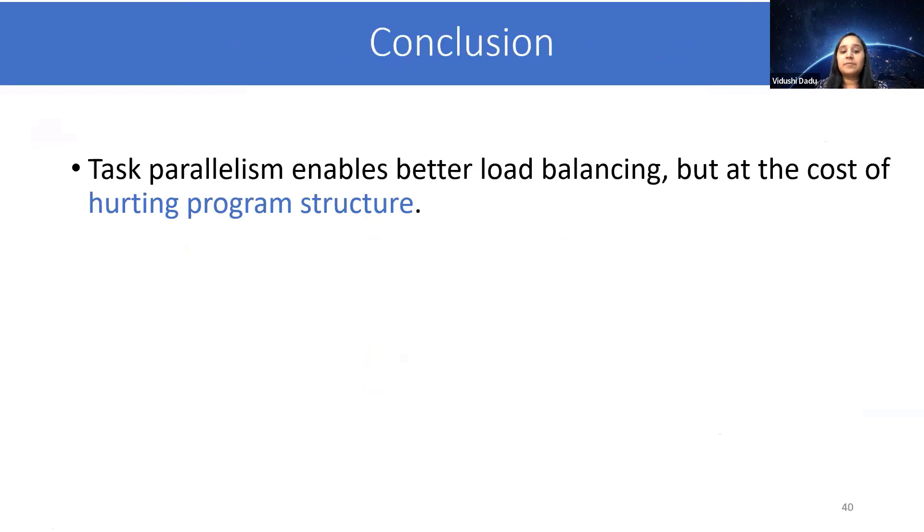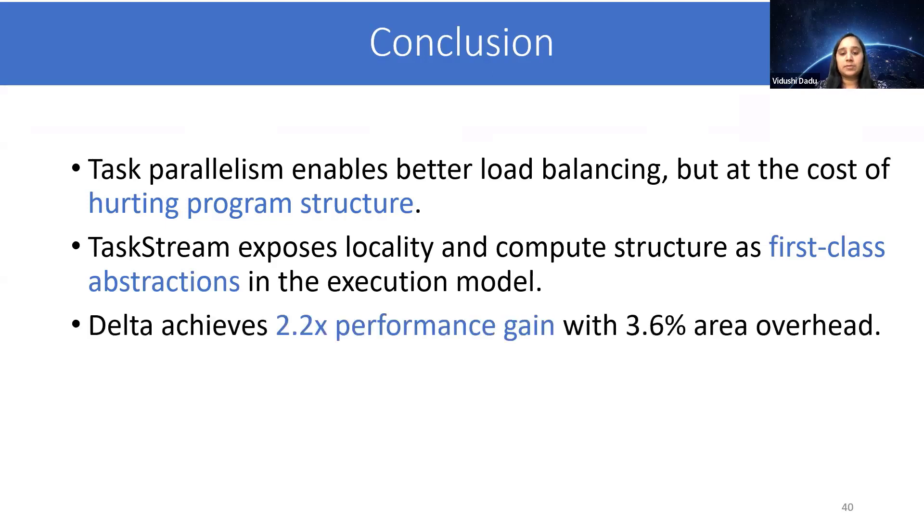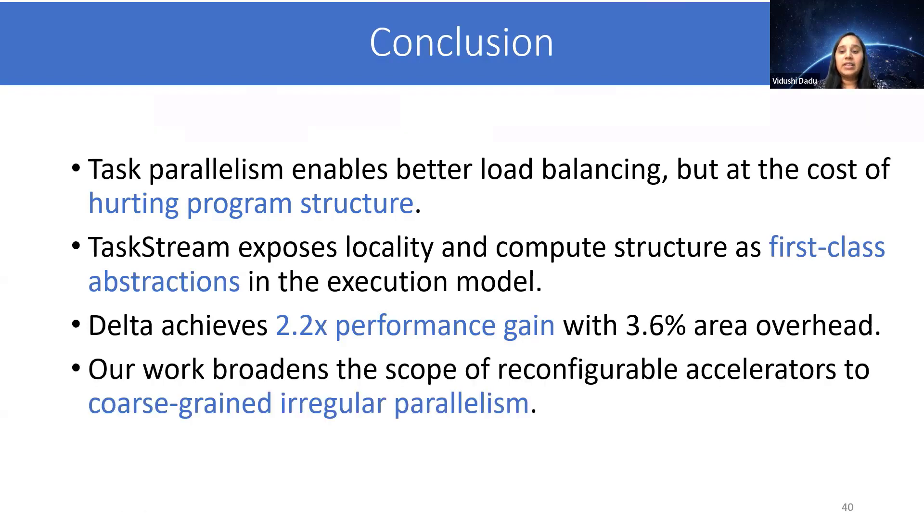In conclusion, task parallelism enables better load balancing, but at the cost of hurting program structure. Our TaskStream execution model exposes locality and compute structure as first-class abstractions in the execution model. And we achieved 2.2x speedup over the static parallel version. Finally, our belief is that in order for the accelerators to be successful and broadly adopted, they need to be efficient on a wide variety of workloads. Supporting task parallelism in such accelerators is definitely one step towards that direction. Thank you.